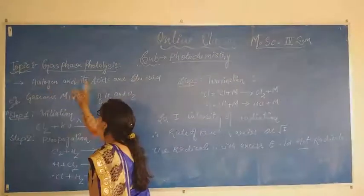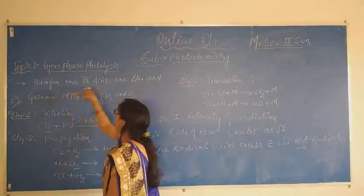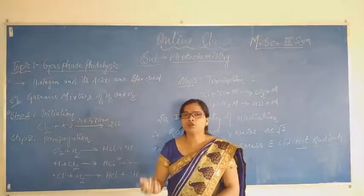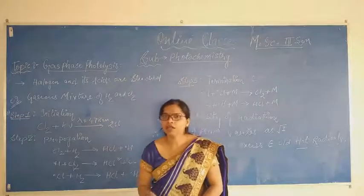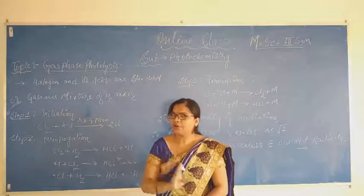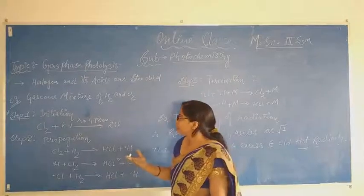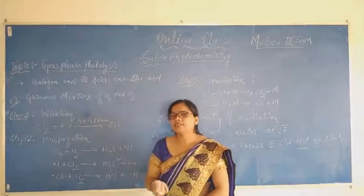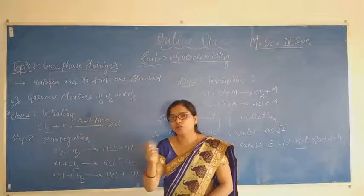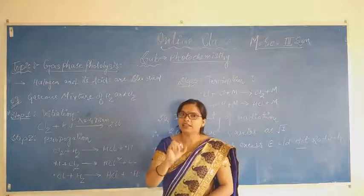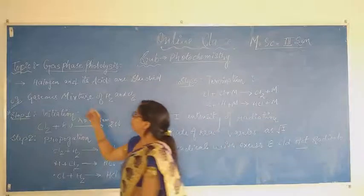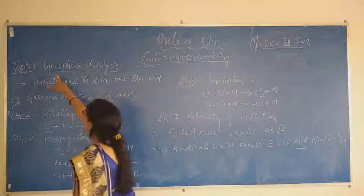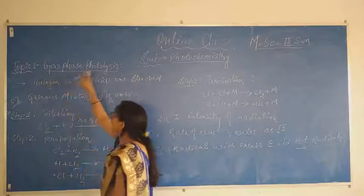This study covers halogens and their acids. What are halogens? The halogens include chlorine and iodine. These are called halogens, and those halogens form acids. For example, the halogen chlorine forms HCl — hydrochloric acid. Halogens and their acids in gas-phase photolysis.